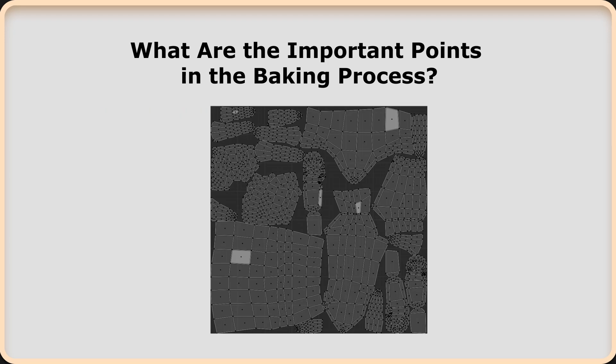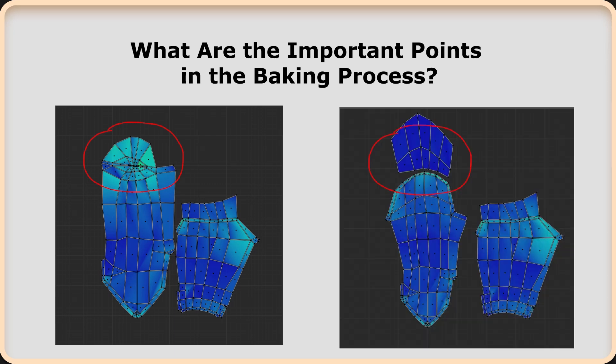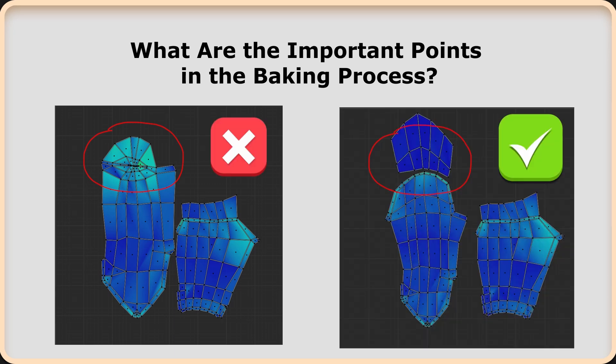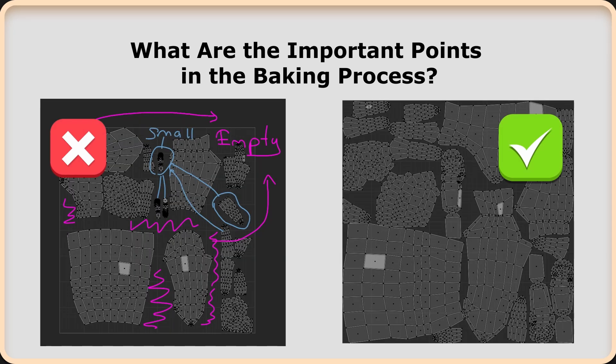When creating your UV maps, you should be careful not to have stretch problems on the surfaces. Secondly, if you leave as little empty space as possible in your UV atlas, you can fit more pixels into your UV map. Don't forget — the more space your model's UV part takes up in the atlas, the more detail you can create.